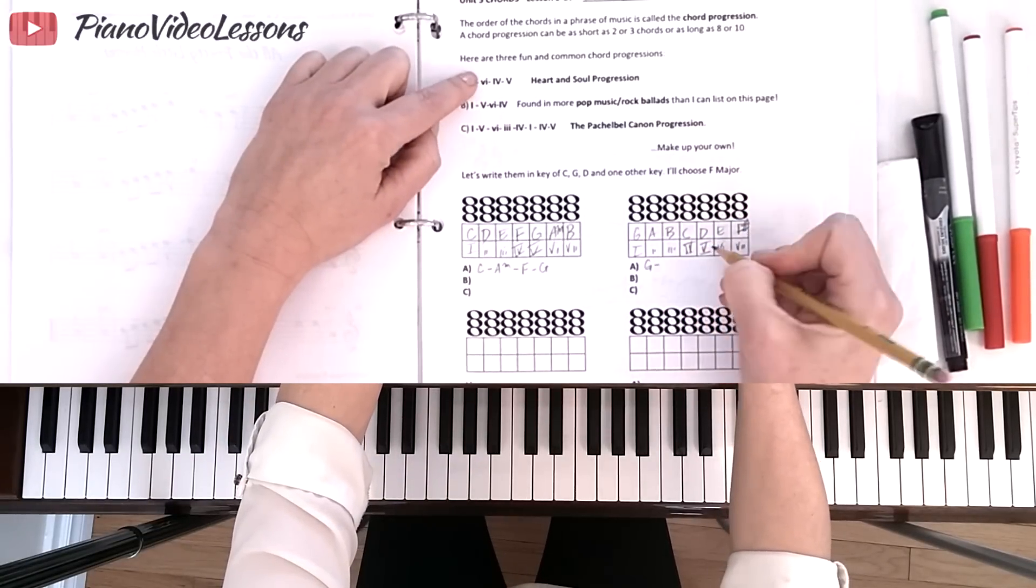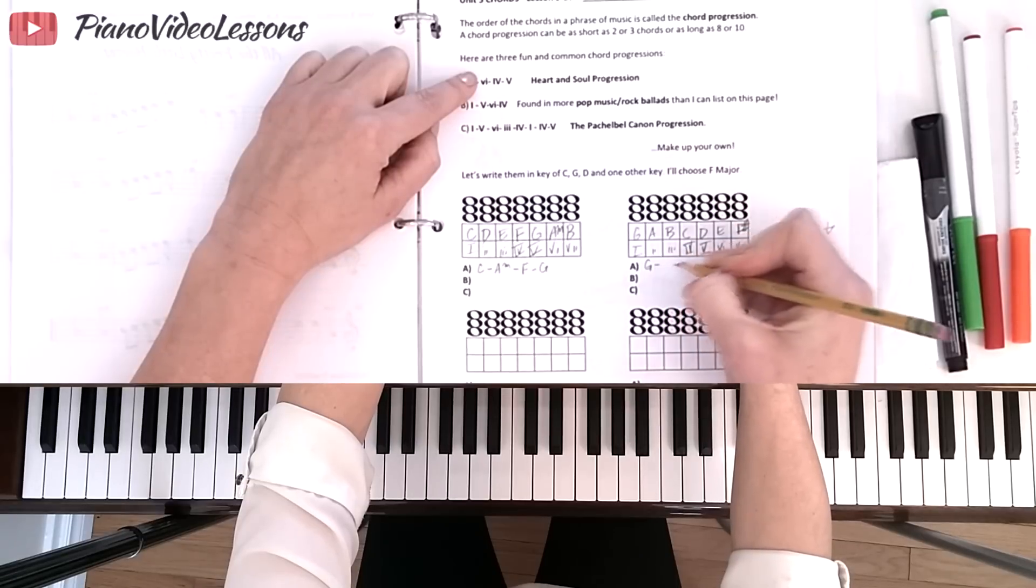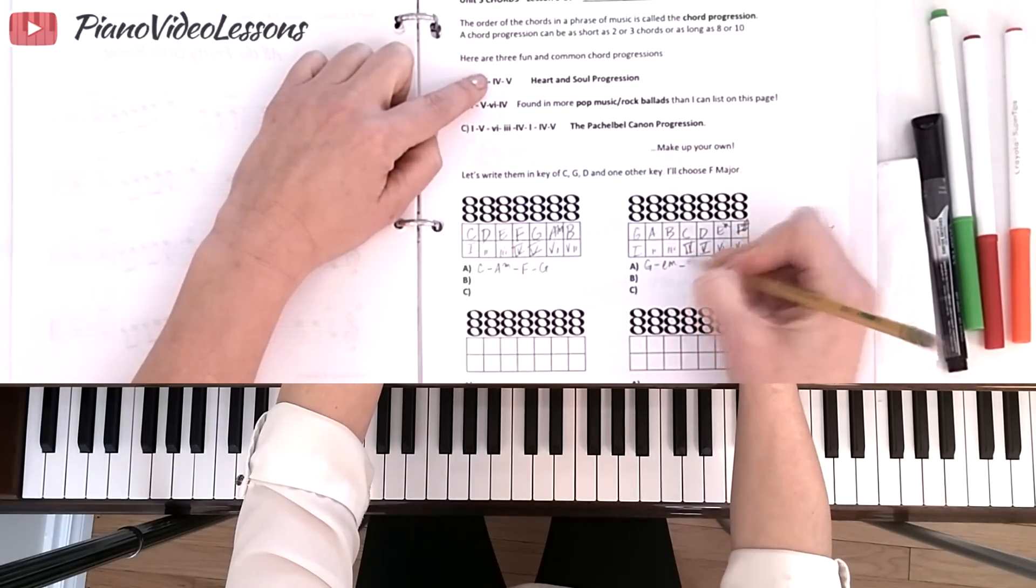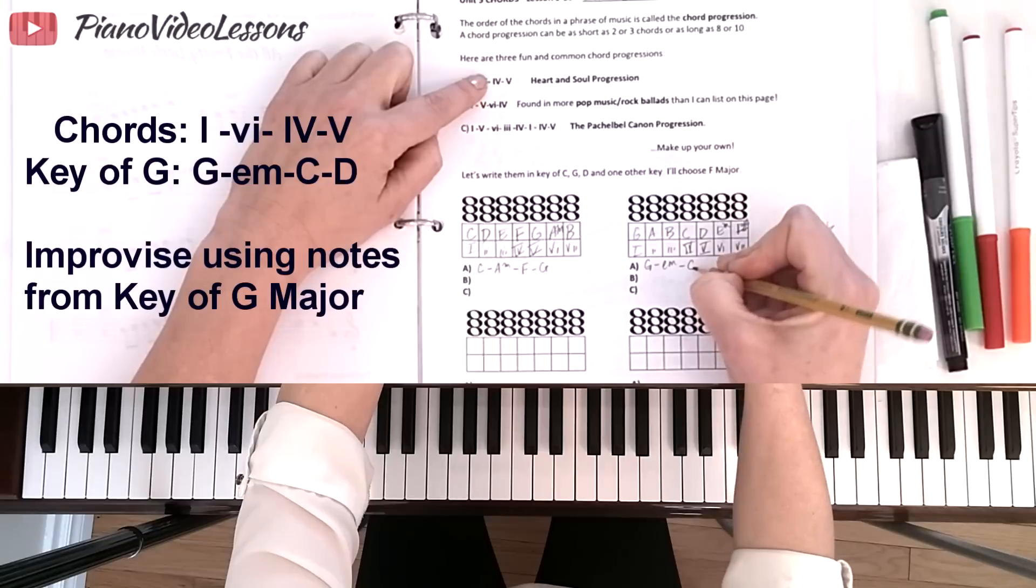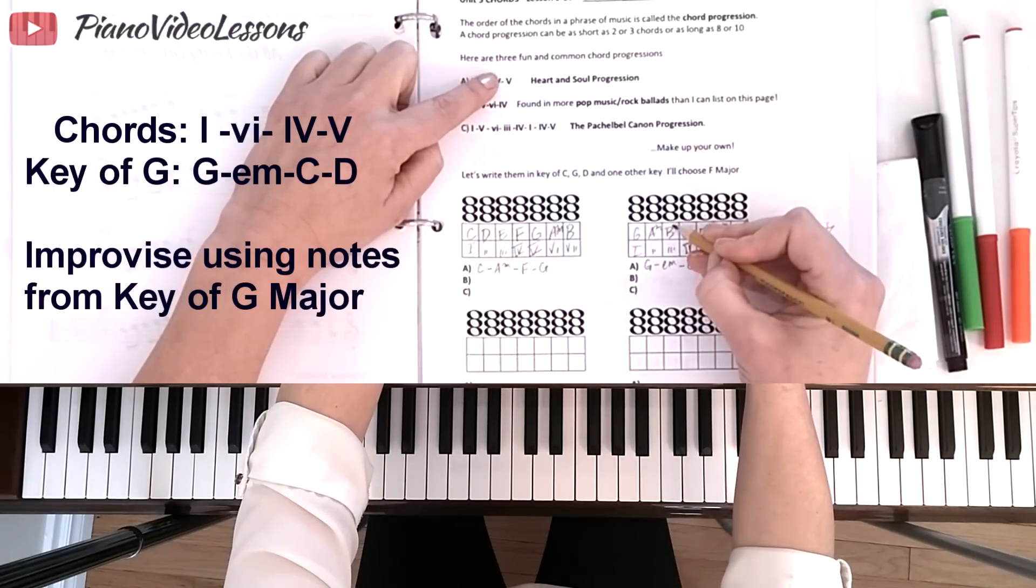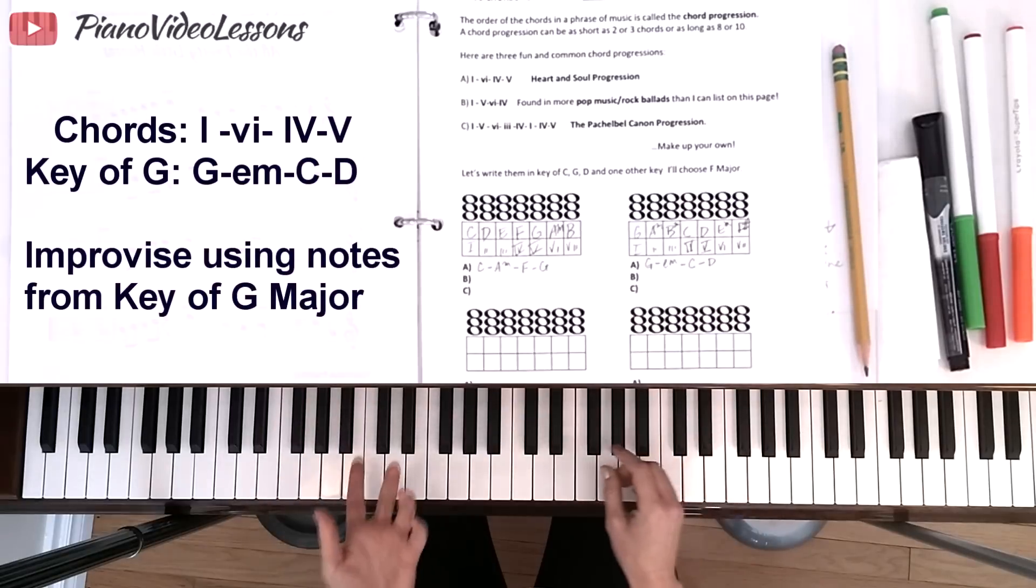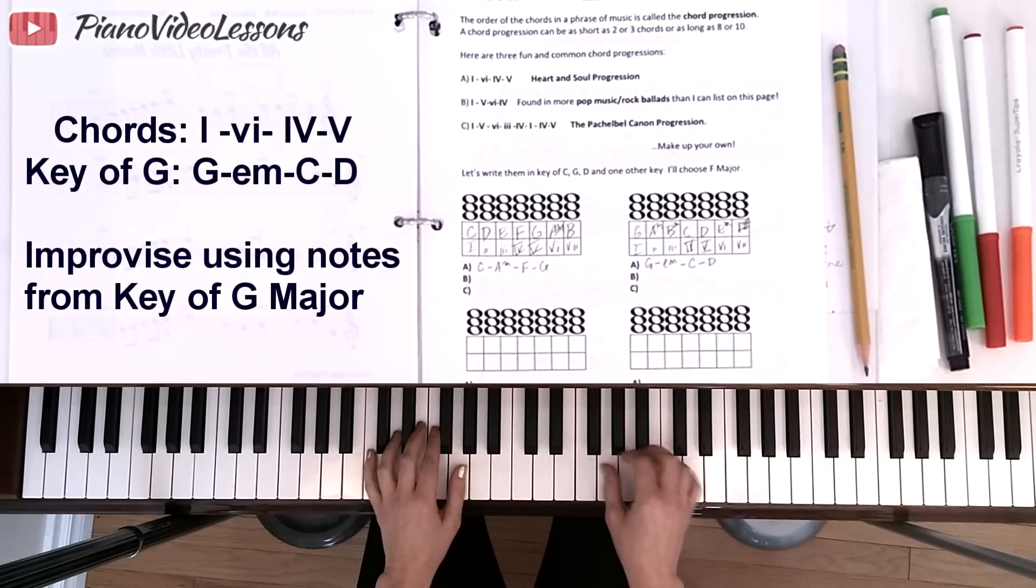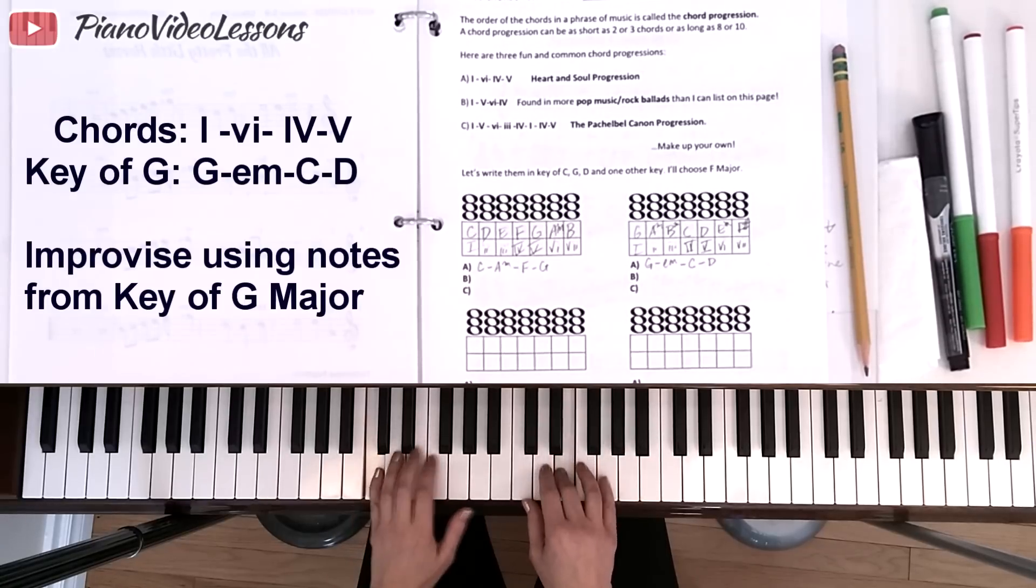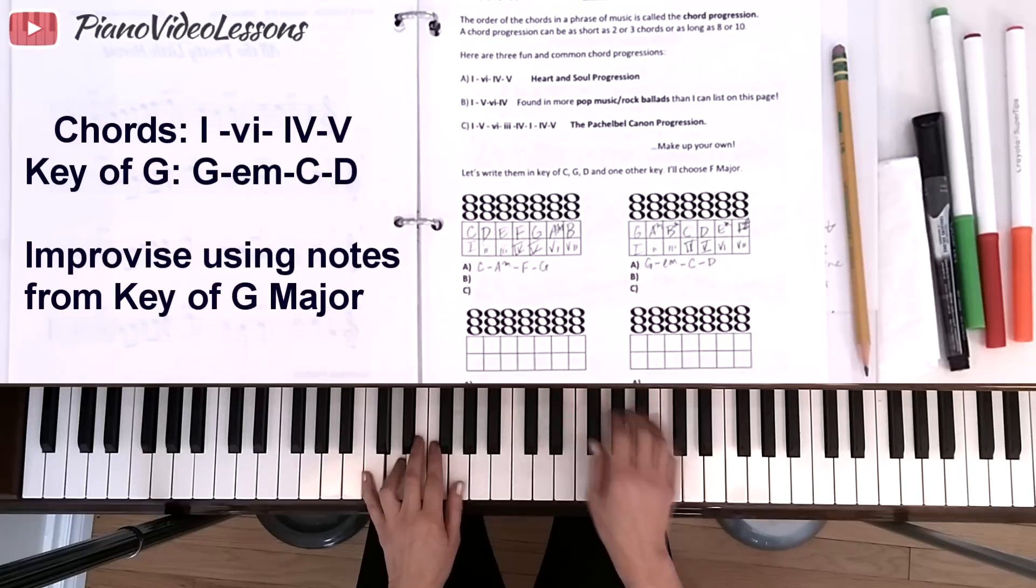The chord progression we said was chord number 1, so we would have G to the 6th chord, which is E minor, to the 4th chord, which is C major, to the 5th chord, which is D major. So we can play through this chord progression in the key of G. We would have G, E, C major, D major with F sharp coming up.